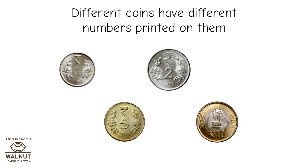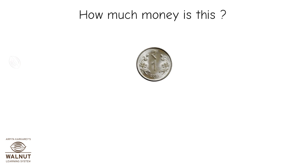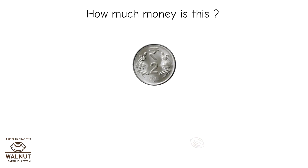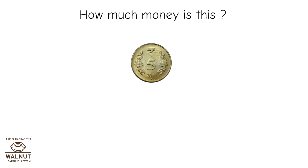Different coins have different numbers printed on them. How much money is this? This is one rupee. And how much money is this? Two rupees. How much money is this? Five rupees.